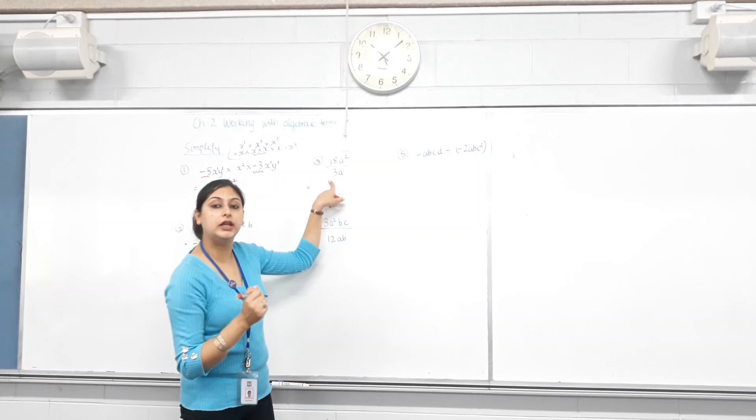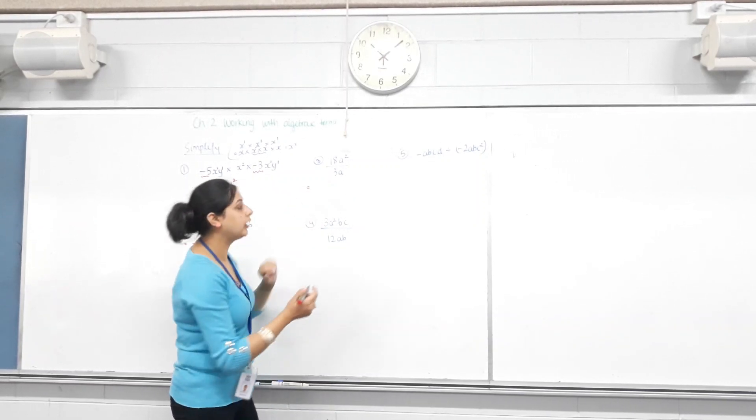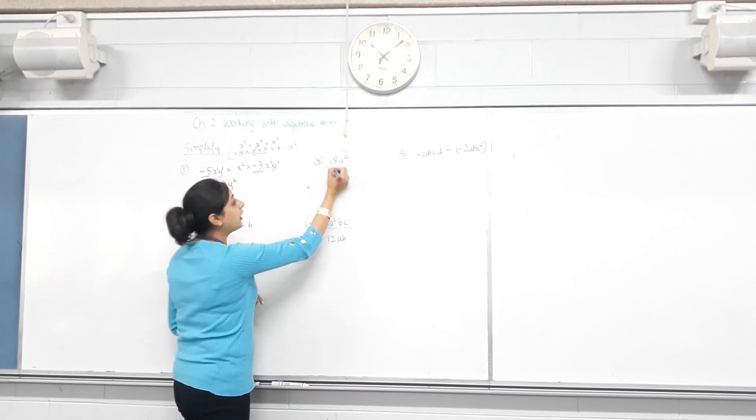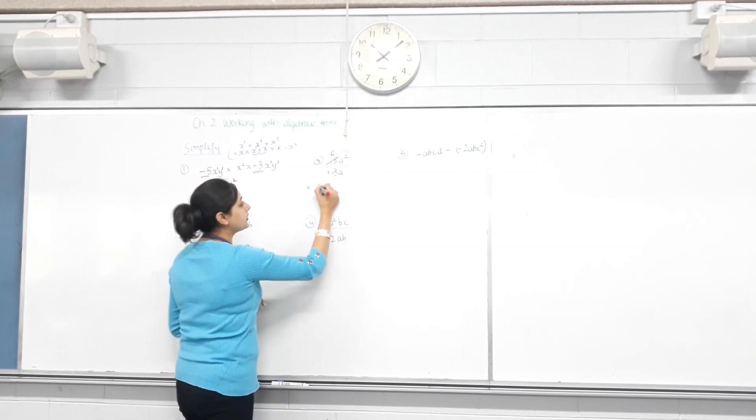Prime number that's common to both? Three. Can I divide both of them by three? Yes. Three divided by three? One. Eighteen divided by three? Six. So, we have six.